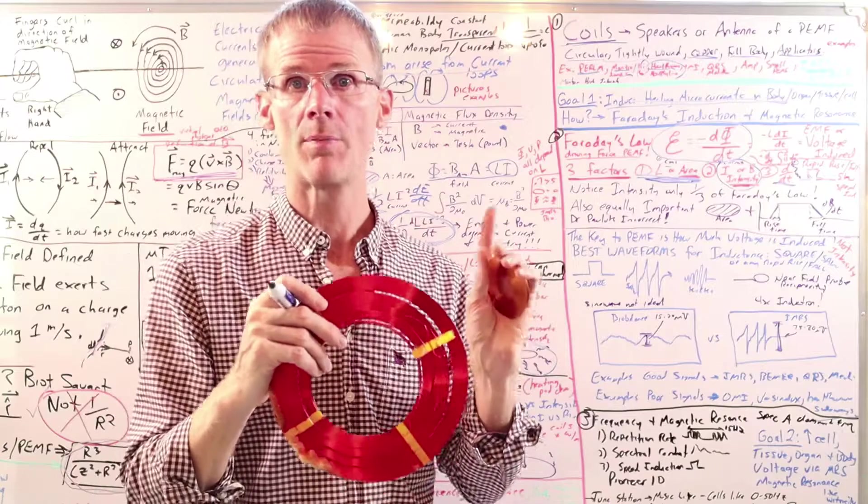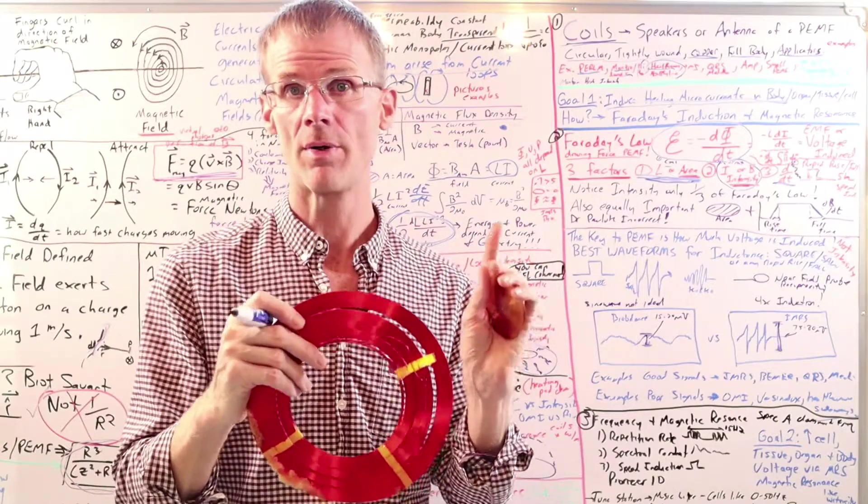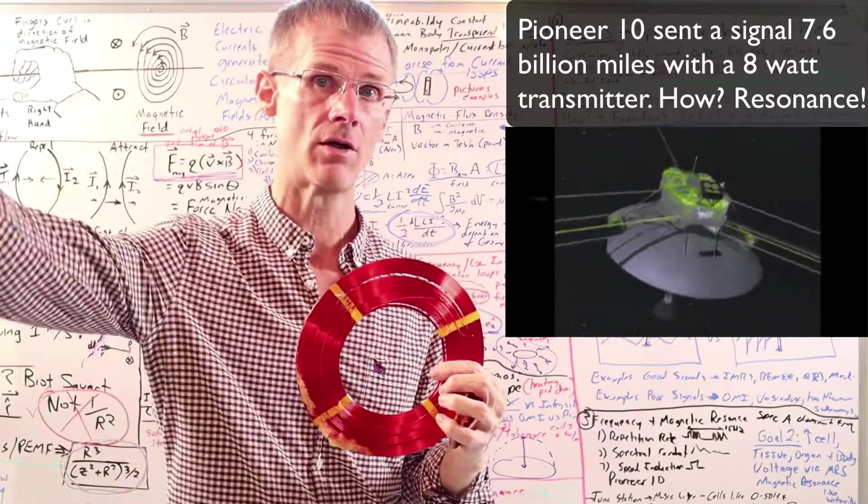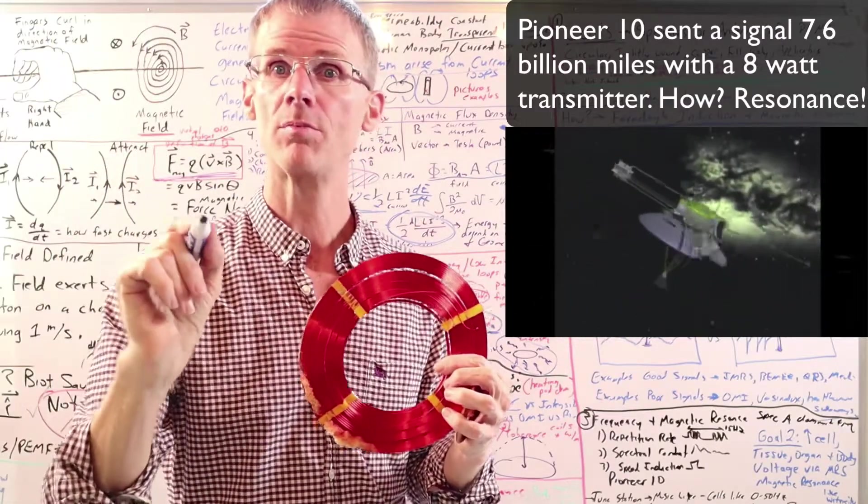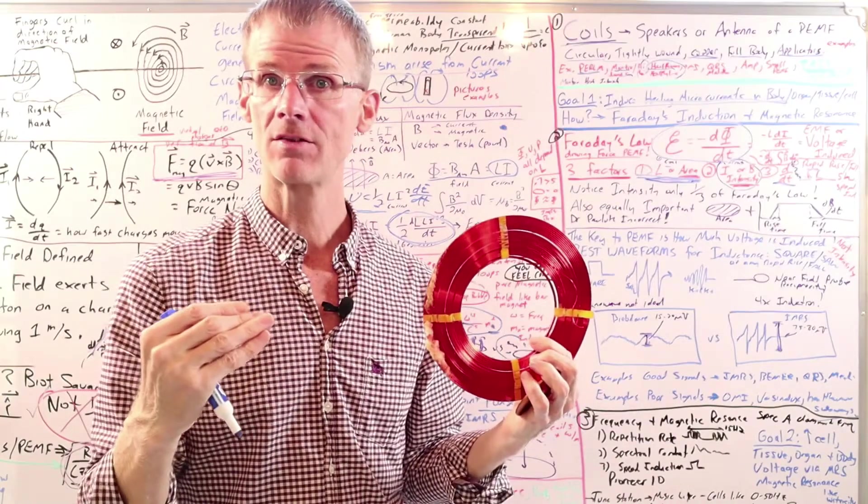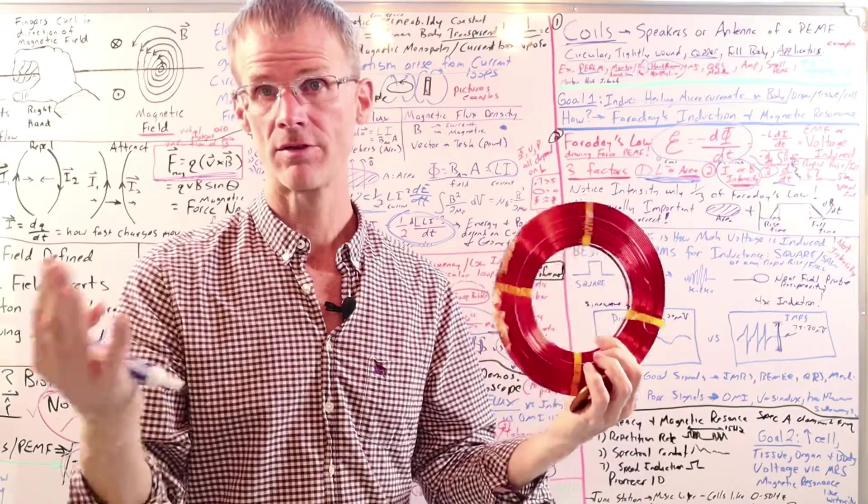So another example showing the power of resonance over intensity is the Pioneer 10. The Pioneer 10 in 2003 transmitted its last signal outside the orbit of Pluto, 7.6 billion miles away. Using an 8-watt transmitter, we were able to pick up that signal. How is that possible? Resonance.